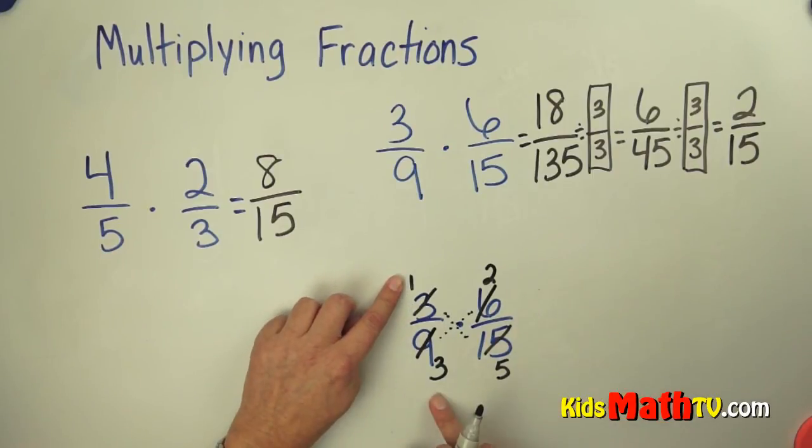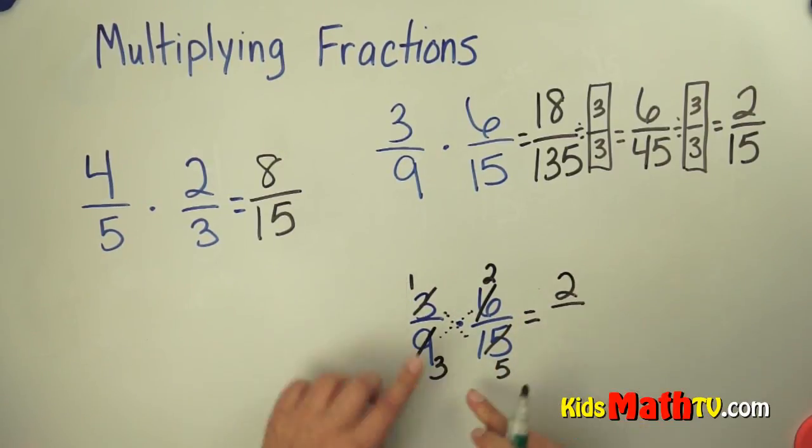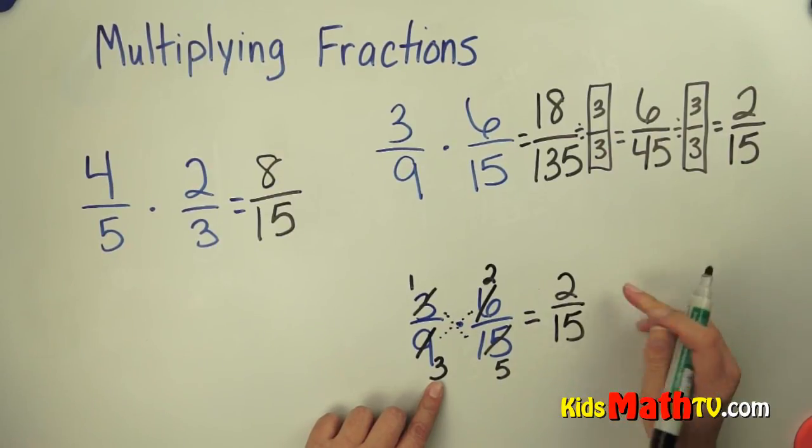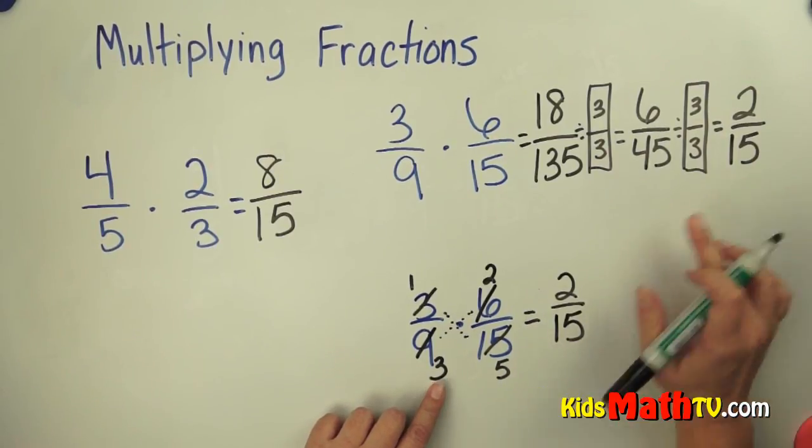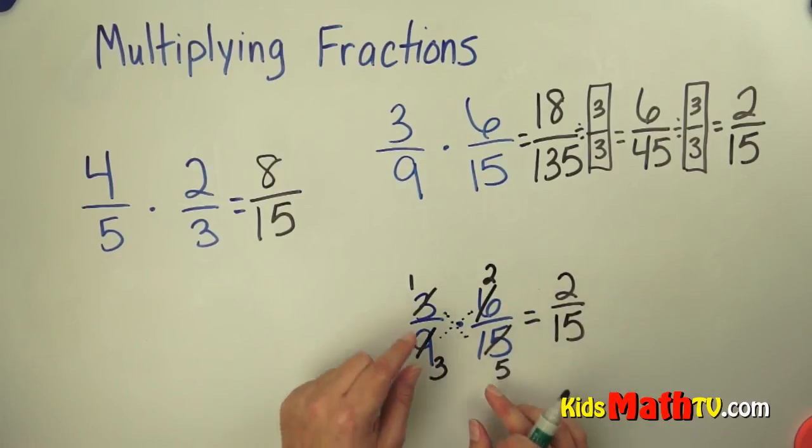Now I have 1 third times 2 fifths. And now I multiply the numerators. 1 times 2 is 2. 3 times 5 is 15. And I get the same answer of 2 fifteenths by doing cross-cancelling first.